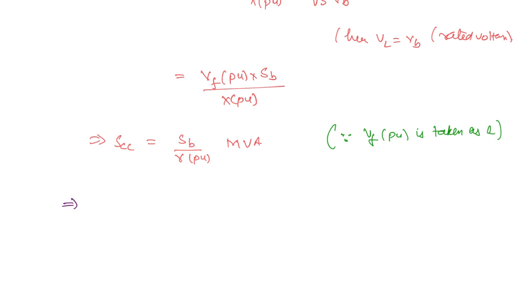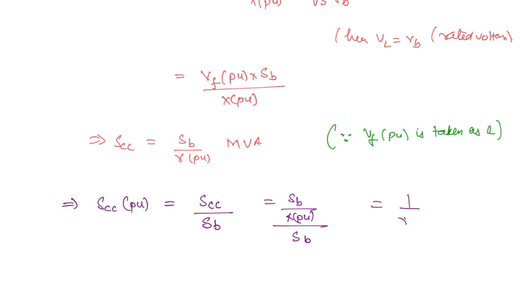From this, we can find the per unit value of short circuit MVA. The per unit SCC is the actual value divided by the base value: (SB / X(pu)) divided by SB, which equals 1 / X(pu). So the short circuit MVA in per unit is simply the inverse of the Thevenin's impedance in per unit. Therefore, SCC in per unit equals 1 / X per unit.